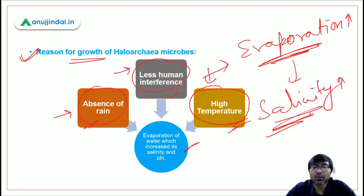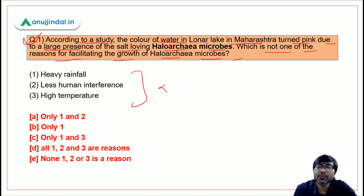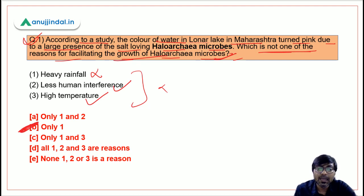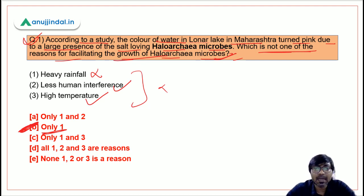The pink colour is because of the biomass of these Haloarchaea microbes — their biomass turned the surface of the water red or pink. Coming to the question: which is not a reason for facilitating the growth of these microbes? Heavy rainfall is not the reason; in fact the correct reason is less rainfall, which leads to more evaporation and increased salinity. So the correct answer is option B — only heavy rainfall is not one of the reasons.